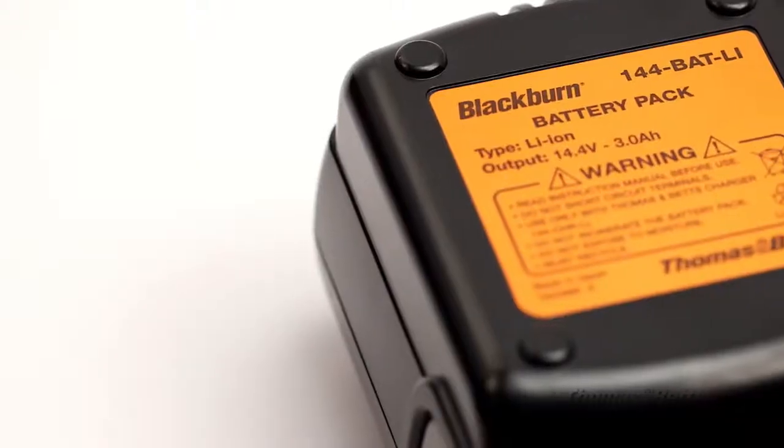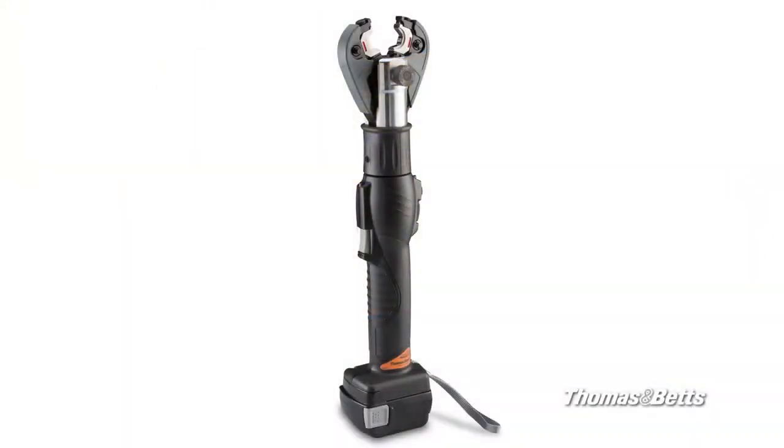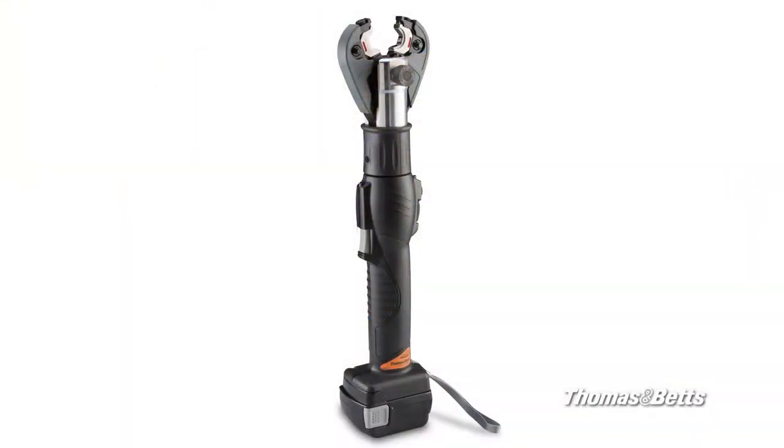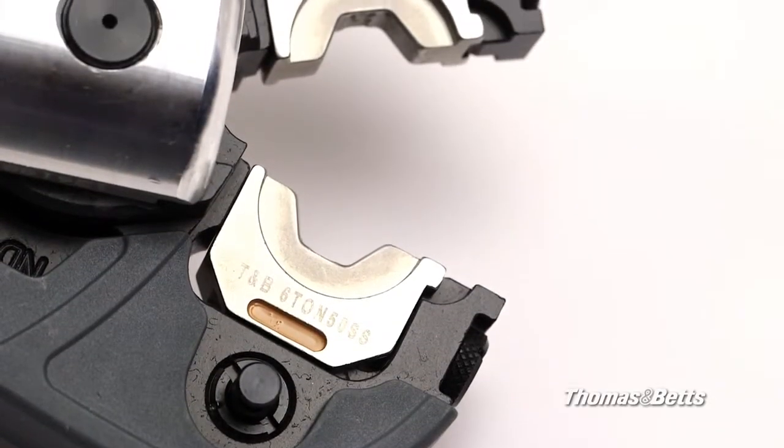One other feature that many contractors like is our 14.4-volt lithium-ion battery. The battery offers lighter weight, longer run time, no memory effect, minimal discharge, and rapid recharge. All tools and batteries come with a standard five-year warranty.